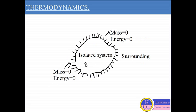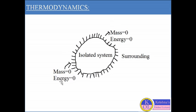The third type of system is the isolated system. An isolated system is defined as one where there is no interaction between the system and surrounding — neither mass nor energy can transfer from or to the system. So we can say the isolated system is like a closed system with no energy transfer either.